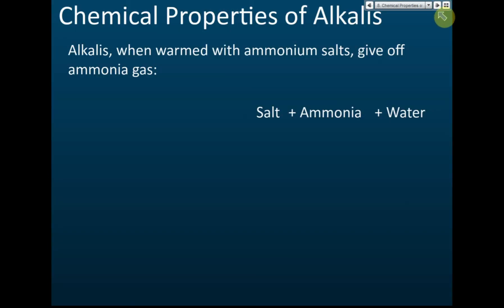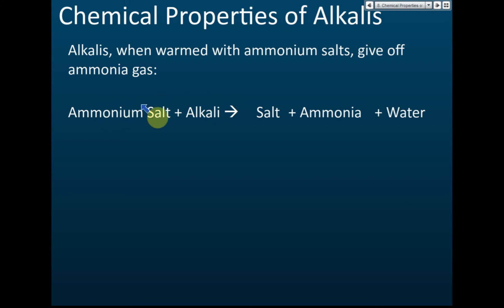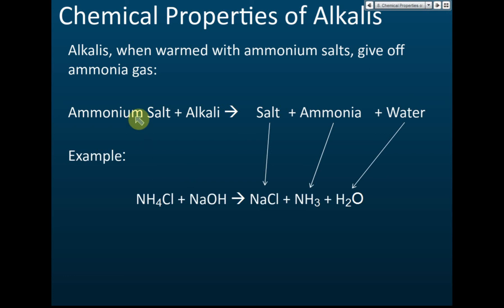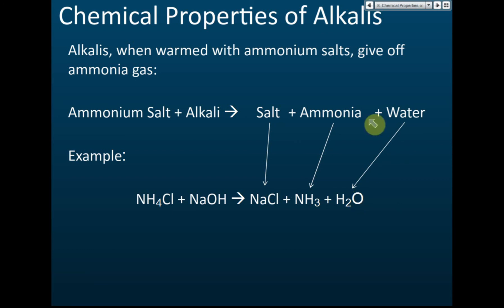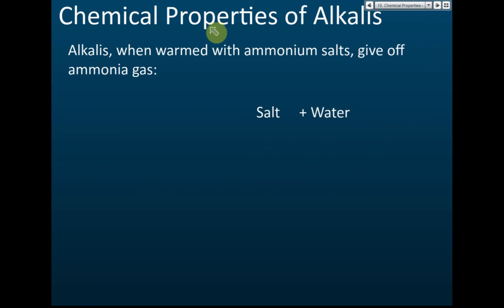There are two chemical reactions you need to know for alkalis. First, alkali reacts with ammonium salt — next chapter we'll discuss salt. When alkali reacts with ammonium salt, it produces another salt, releases ammonia gas, and produces water. For example, sodium chloride reacts with sodium hydroxide — this is the alkali — to produce sodium chloride, ammonia gas, and water.